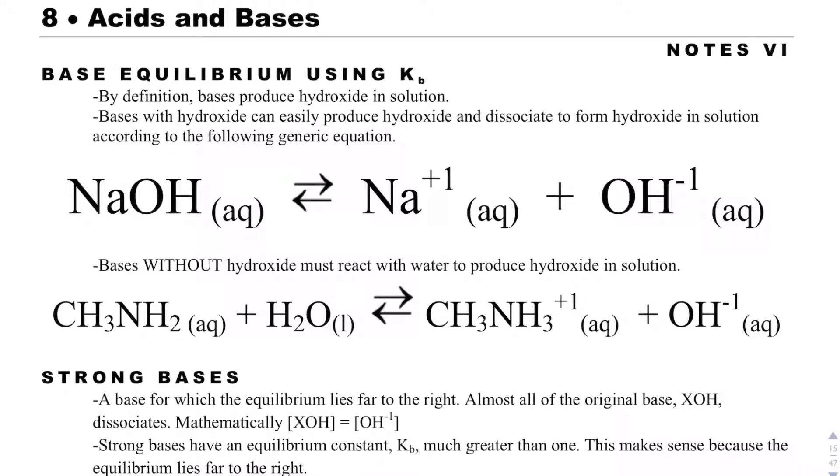In this video, we will discuss how to solve problems that use Kb. By definition, bases are going to produce hydroxide in solution. And so therefore, if you want to use Kb, you must have OH- as a product.